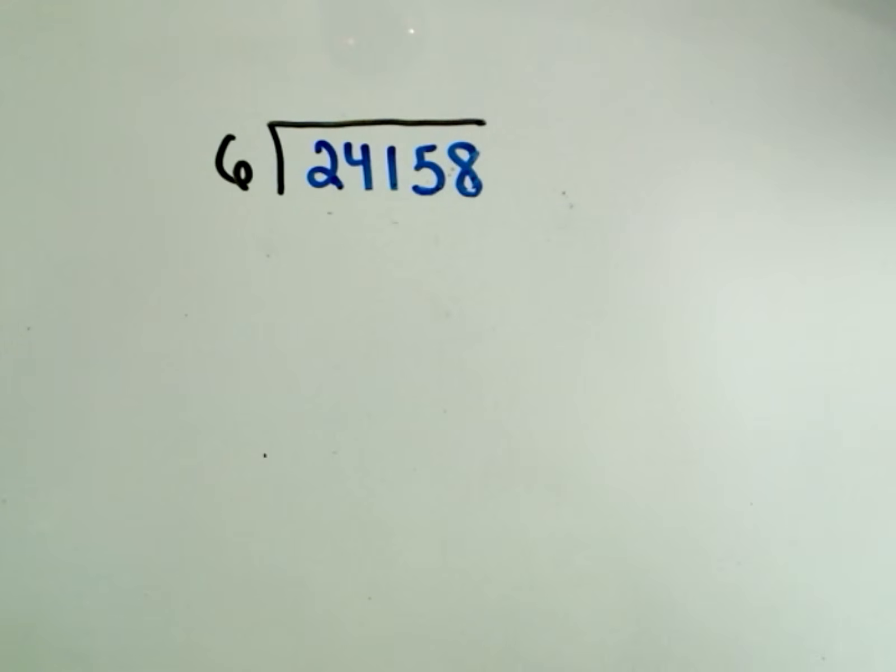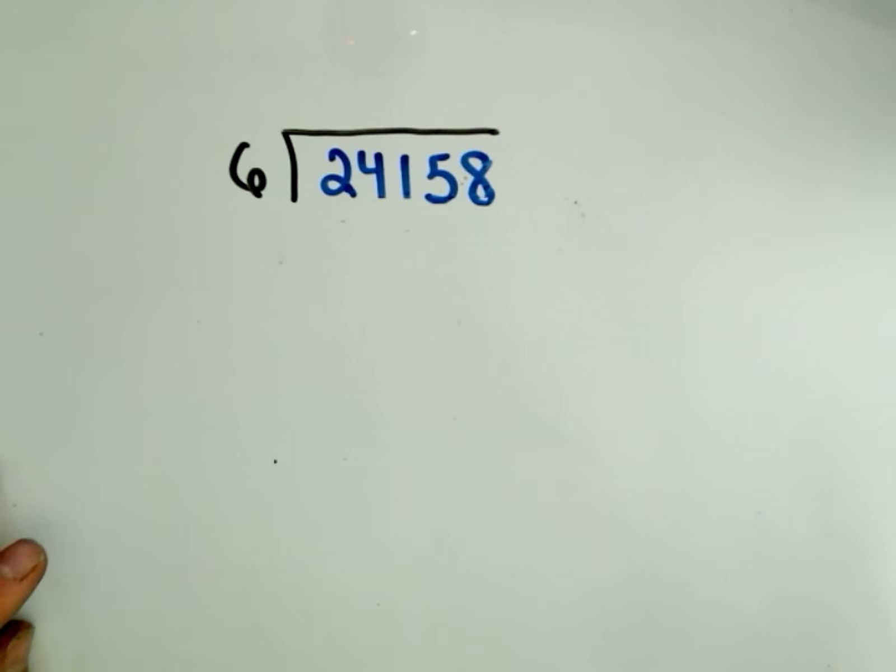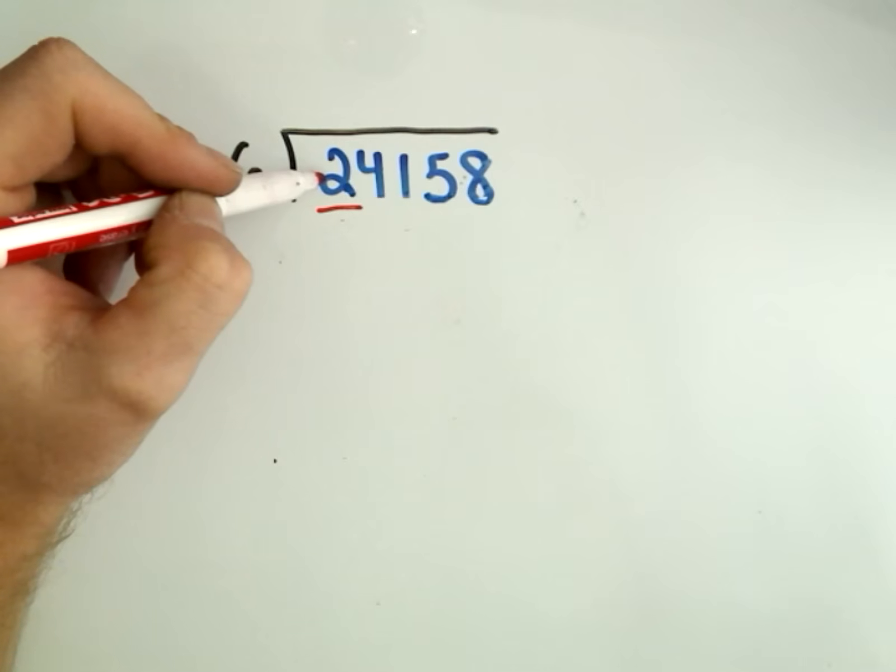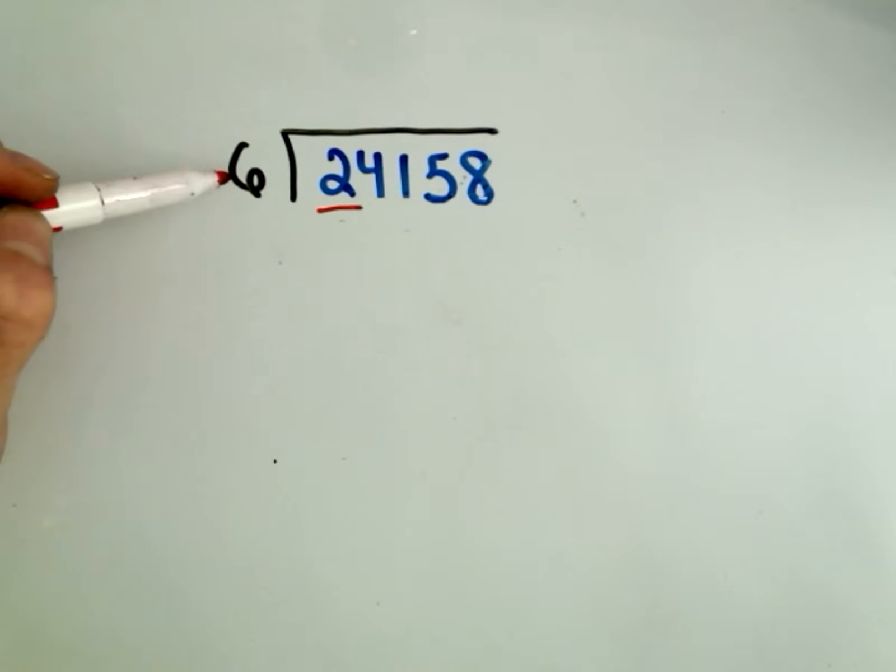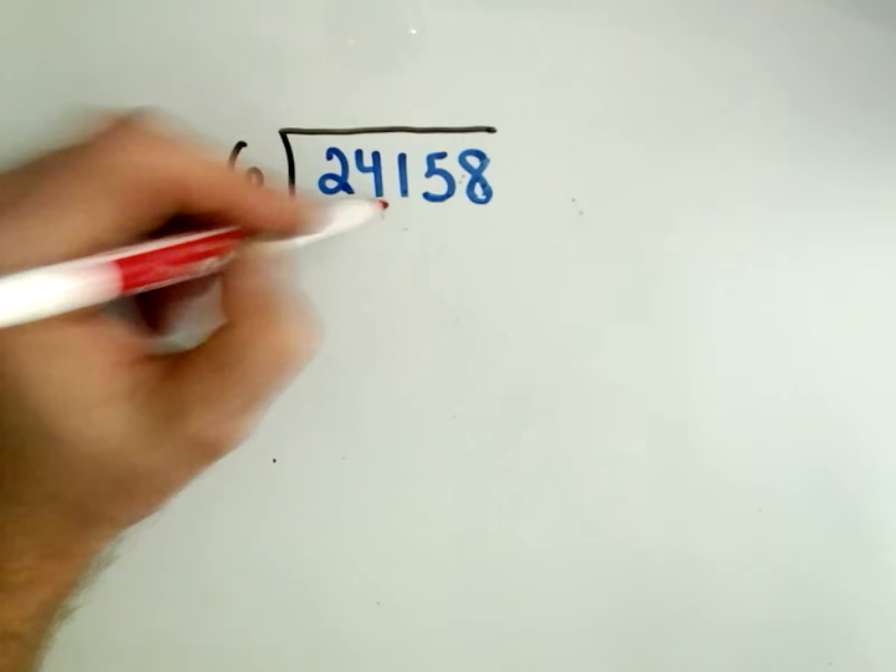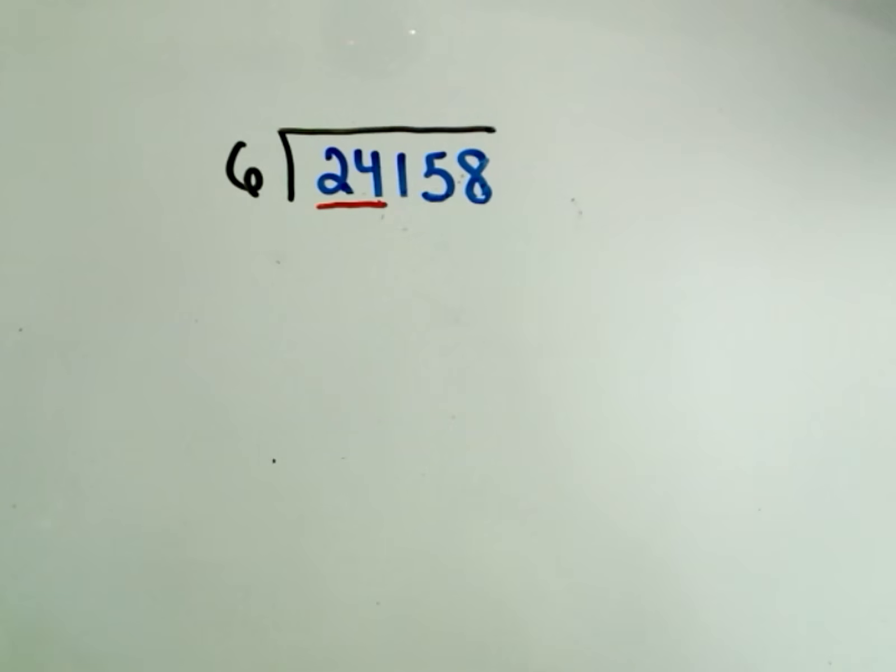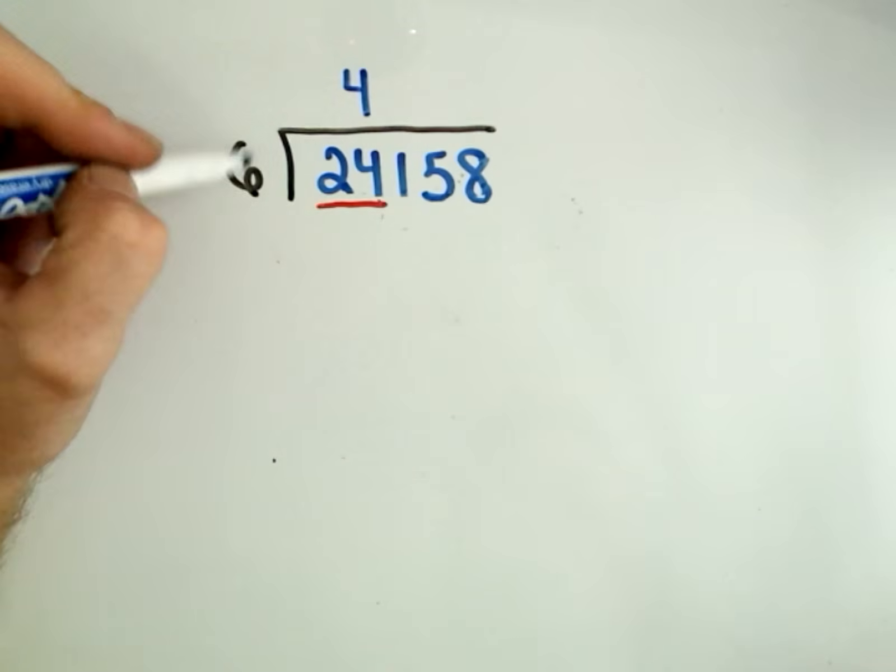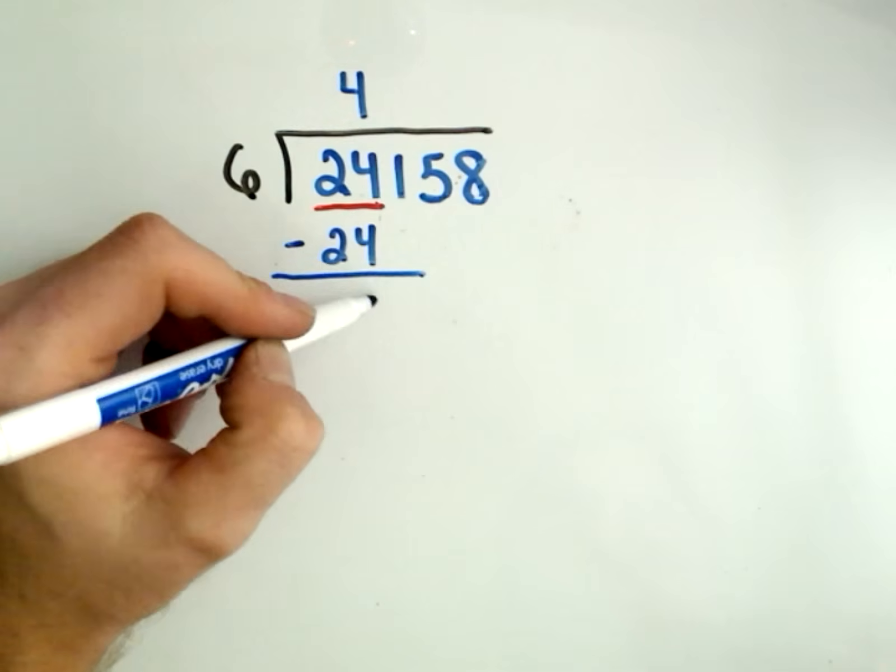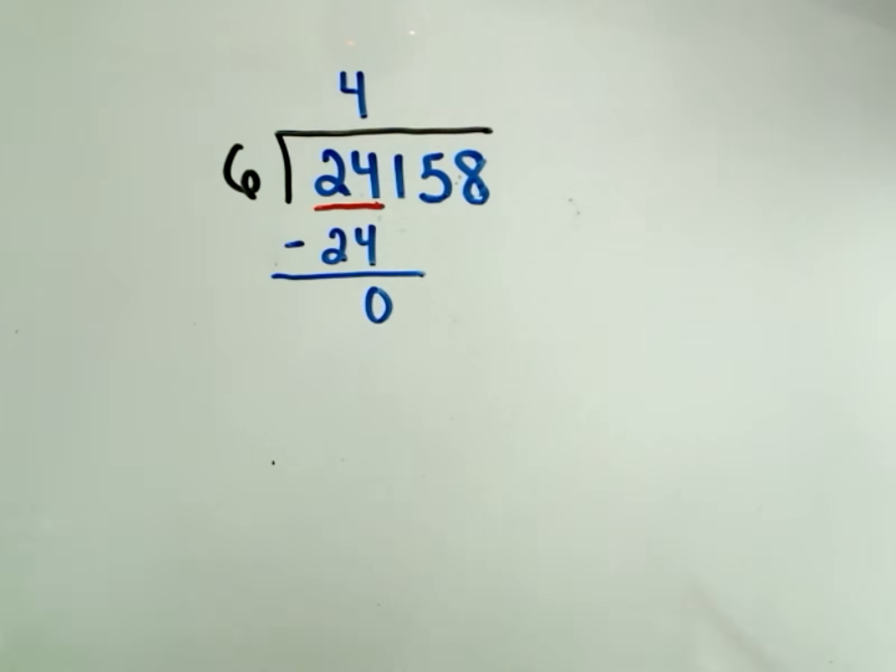So what I do when I do long division, and it's crucial to know your multiplication tables when you do long division or it's just going to make it really hard. So I look at the first number, 6 and 2. Will 6 go into the number 2 a whole number of times? The answer is no because 6 is too big. So then I look at the next two numbers, will 6 go into 24? Well, 6 times 4 is 24. Then I multiply, 4 times 6 is 24, and I subtract and I'll get just zero this time, and then I drop down the next number.